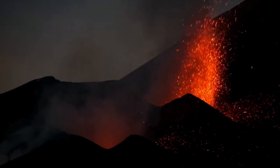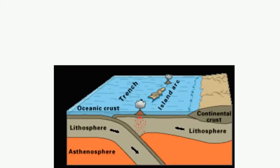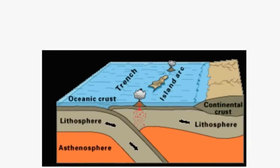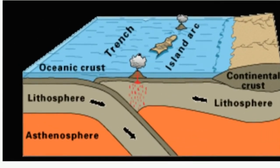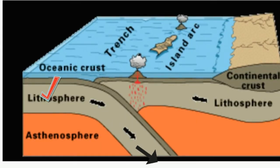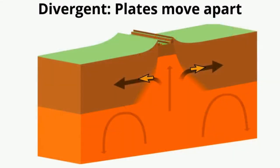Ocean to ocean collisions occur when two plates of ocean crust collide. The older, more dense plate subducts under the younger plate, and as a result, the crust melts and creates an island arc. Next you have divergent boundaries.